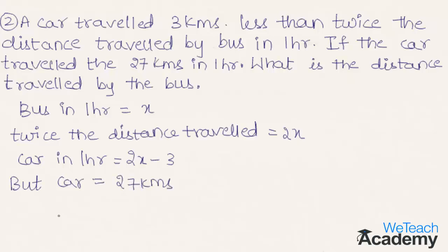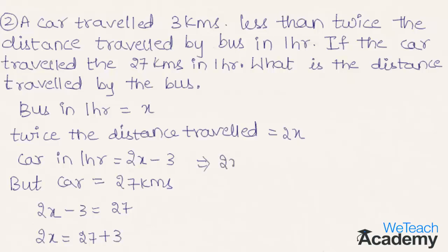Now let us equate both the distances travelled by the car. By equating we get 2x minus 3 equal to 27. By transferring minus 3 to the right hand side we can write this as 2x equal to 27 plus 3, which gives us 2x equal to 30. By transferring 2 to the other side we get x equal to 30 divided by 2.